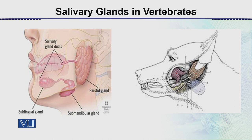This means that salivary amylase converts polysaccharides into disaccharides, which is why we start feeling sweetness in taste. These are the various salivary glands found in vertebrates in their modified forms, and their direct function is also to digest food. This is all about the salivary glands in vertebrates.